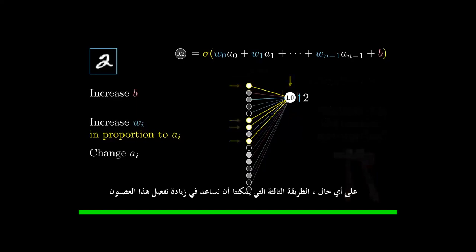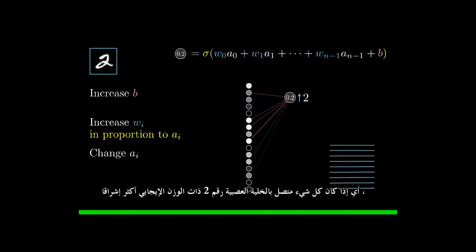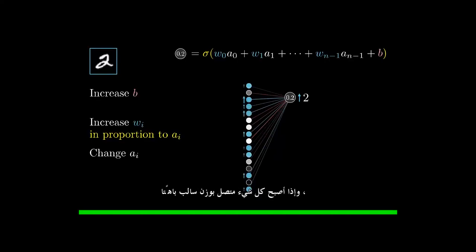Anyway, the third way that we can help increase this neuron's activation is by changing all the activations in the previous layer. Namely, if everything connected to that digit 2 neuron with a positive weight got brighter, and if everything connected with a negative weight got dimmer, then that digit 2 neuron would become more active.